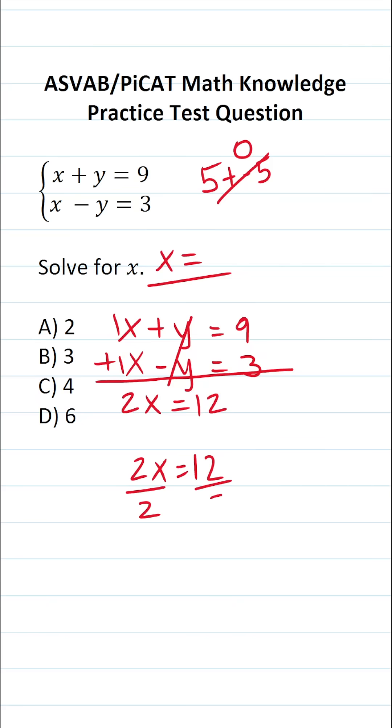That said, it's a one-step equation. The only thing we have to do to get x by itself is divide both sides of the equation by 2. This says x equals 12 divided by 2, which is 6. So the value of x in this system of equations is D, 6.